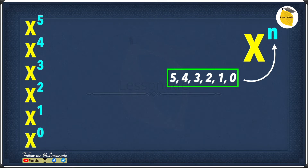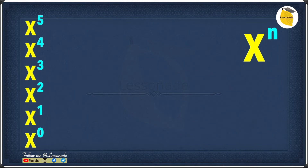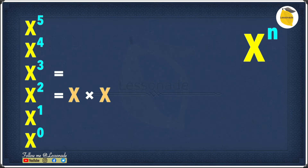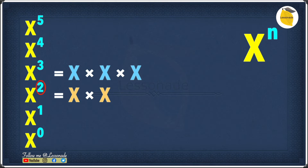Now let's look at the actual pattern. X to the power of 2 is x times x, and x to the power of 3, or x cubed, is x times x times x. The pattern here is that the exponent tells you how many x's you are multiplying together. X squared means multiplying 2 x's, and x cubed means multiplying 3 x's.